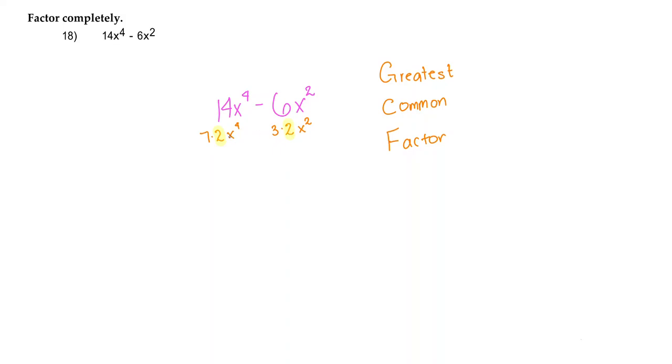So if we were to rewrite this x to the 4th power in its most smallest factors, we could rewrite it as x times x times x times x. And then x squared can be rewritten as x times x.